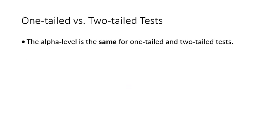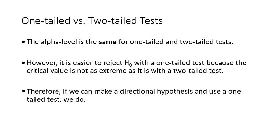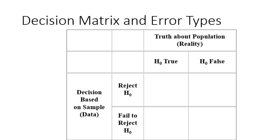The alpha is the same for one and two tailed. However, it's easier to reject the null with one-tailed because the critical value is not as extreme. The farther you go to the right or left, the more extreme your cutoff value is going to be. So if we can use a directional hypothesis or a one-tailed test, we do. Let's look at the decision matrix and errors — what is going on here is we have two different competing things. We have reality: our null hypothesis is either true or false. The problem is we can't know what's going on in reality.